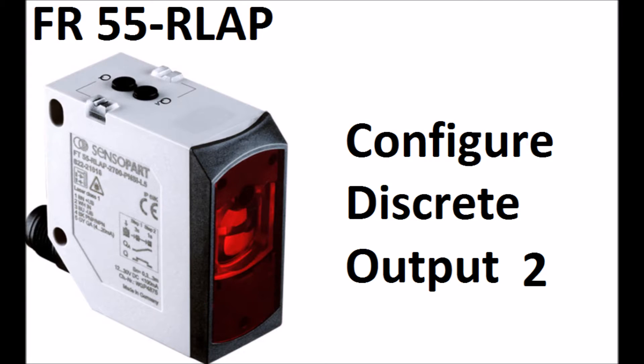To configure discrete output two, it's much the same as output one, except you press and hold the button for six seconds at the beginning. So here, we press and hold, and at three seconds, you'll see the lights flash slowly. We keep holding it. At six seconds, they'll flash faster. There we go. Now we can move the target or not, depending on window or point mode. And the second step, tap the button.